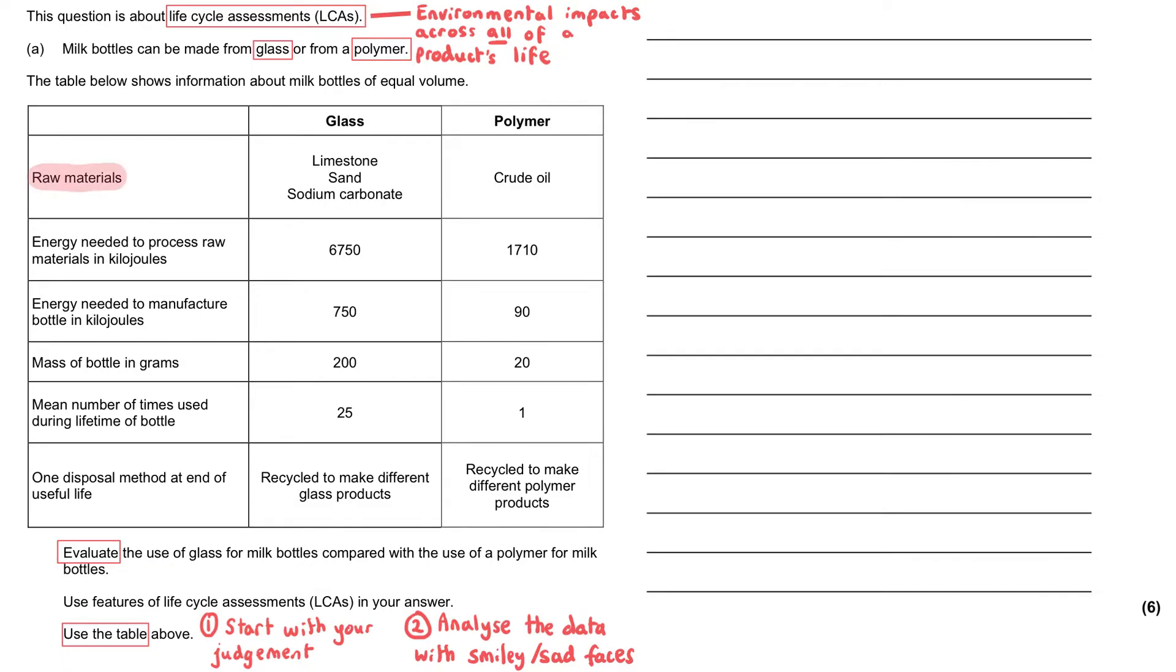The raw materials for glass and for polymers. Well, the raw material for polymers is crude oil, and we know that crude oil is finite, and that makes it worse than glass, which uses sand and limestone, which, whilst they take a long time to form, they don't take millions of years. So I recommend putting smiley faces and sad faces in each of these instances.